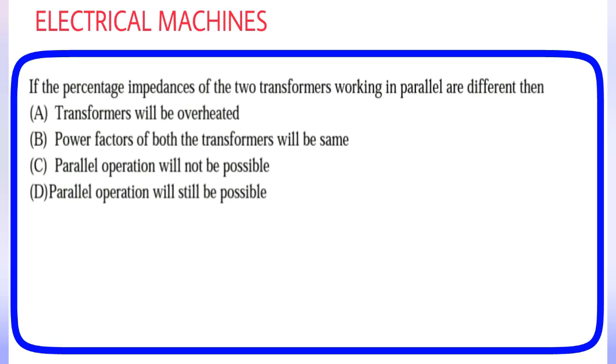If the percentage impedances of the two transformers working in parallel are different then: (A) Transformers will be overheated, (B) Power factors of both the transformers will be same, (C) Parallel operation will not be possible, (D) Parallel operation will still be possible. Answer is option D, parallel operation will still be possible.